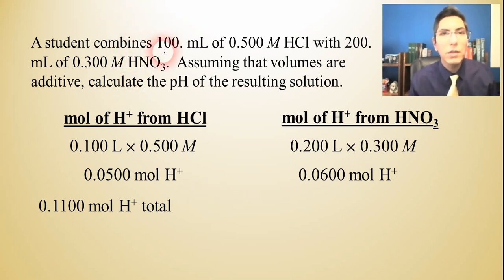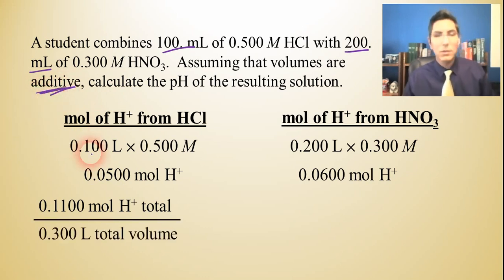Well, we had 100 milliliters here, and we had 200 milliliters over here. That's a total of 300 milliliters. They're additive. So 300 milliliters or 0.3 liters total volume. When you divide that, we find that the molarity is about 0.367 molar of H+.